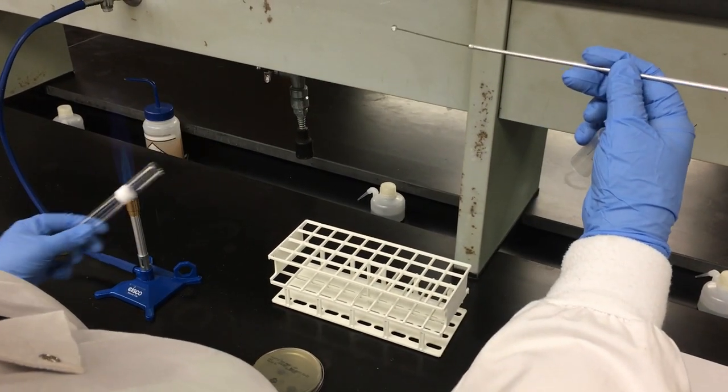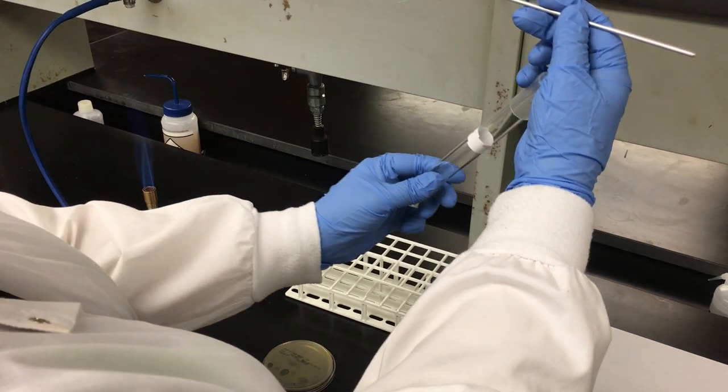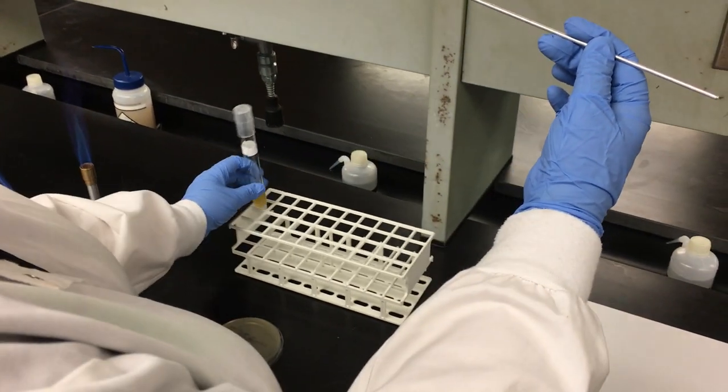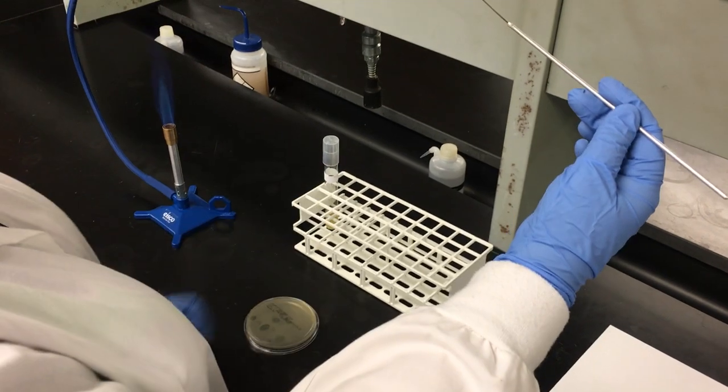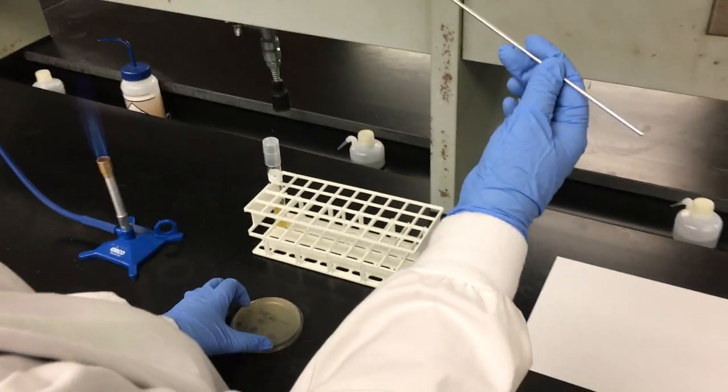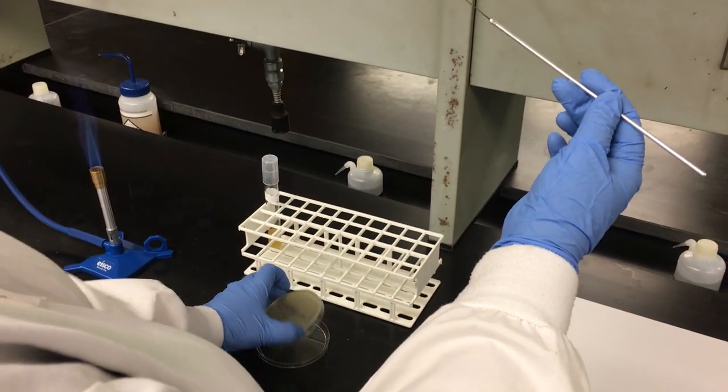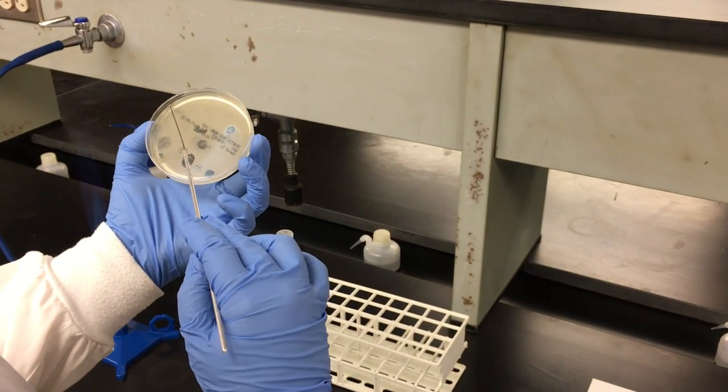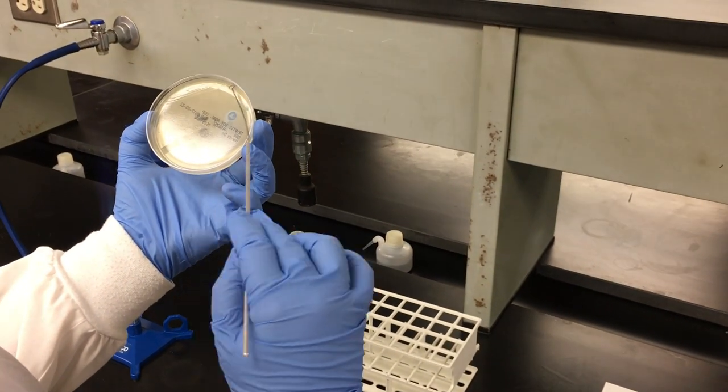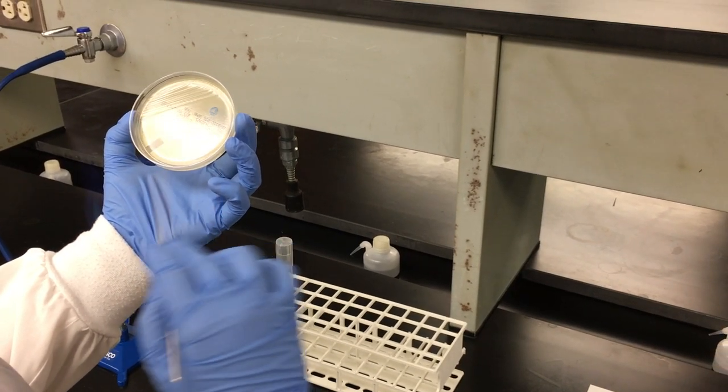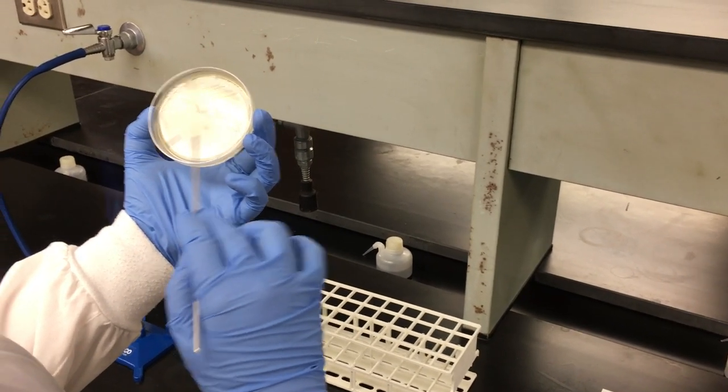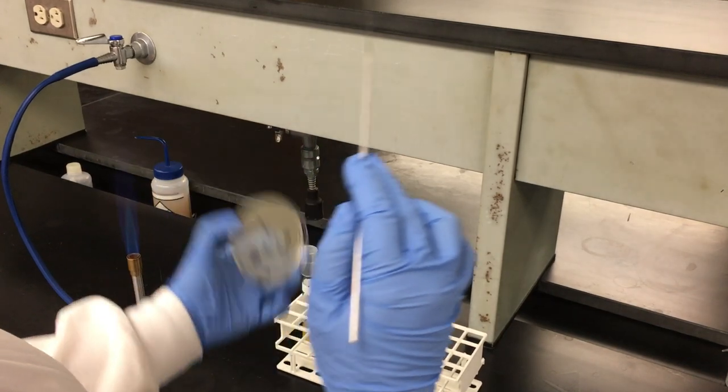Remove it. Reflame. Recap and place back in my rack. I will then proceed to streak my plate using three different quadrants. My first quadrant will be done in a zigzag pattern back and forth very quickly in the first quarter of my plate just to make sure that I've got enough organism.